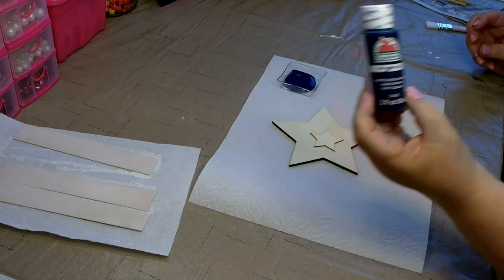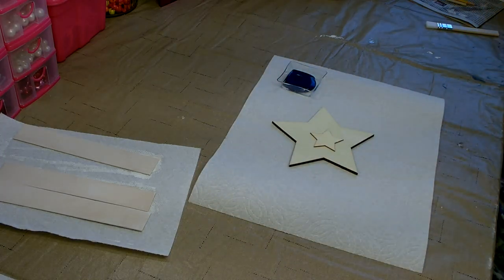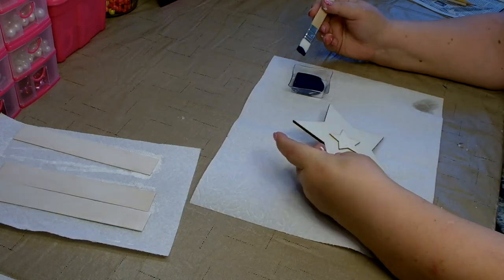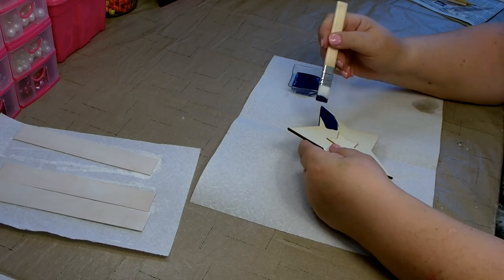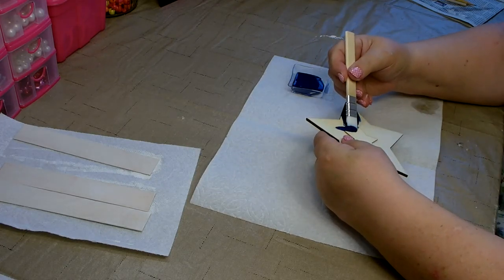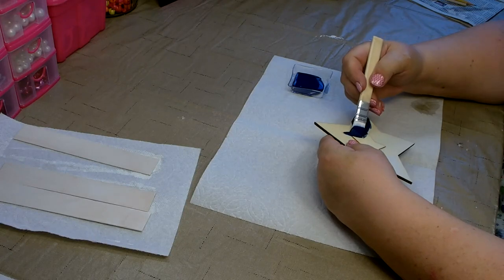Using admiral blue, you'll want to paint the star with one coat. You don't need to do the star in the center, we'll be painting that white.